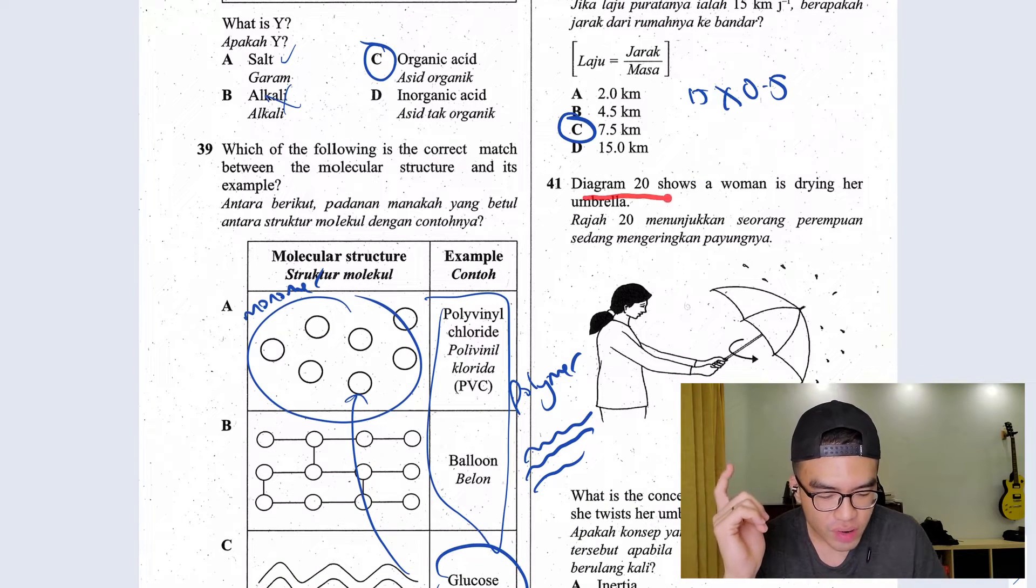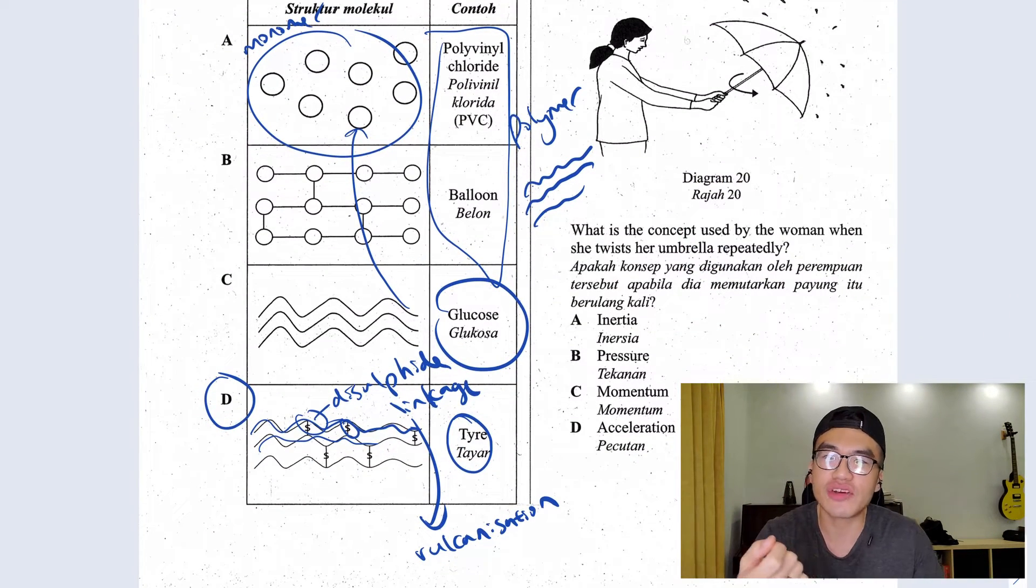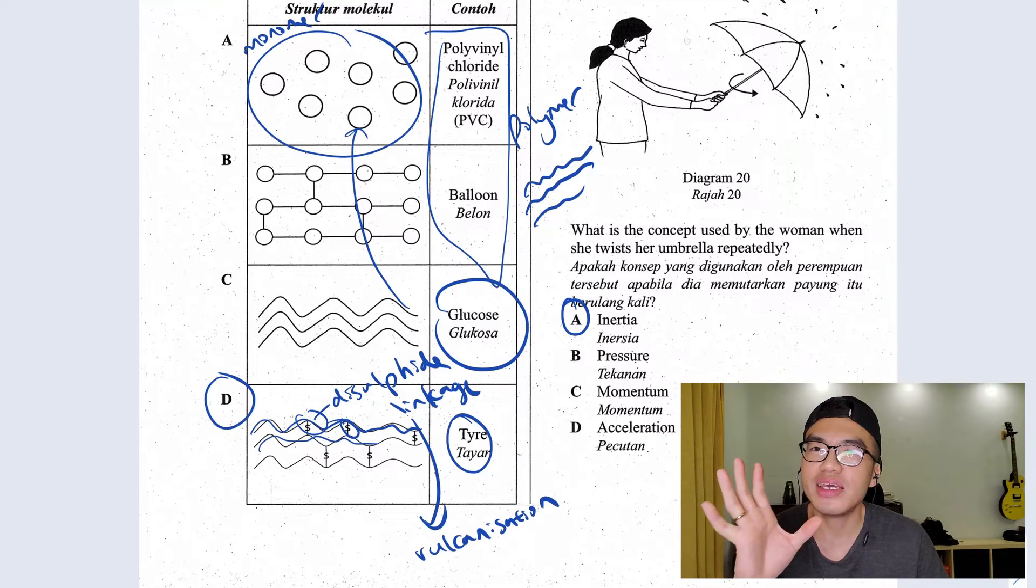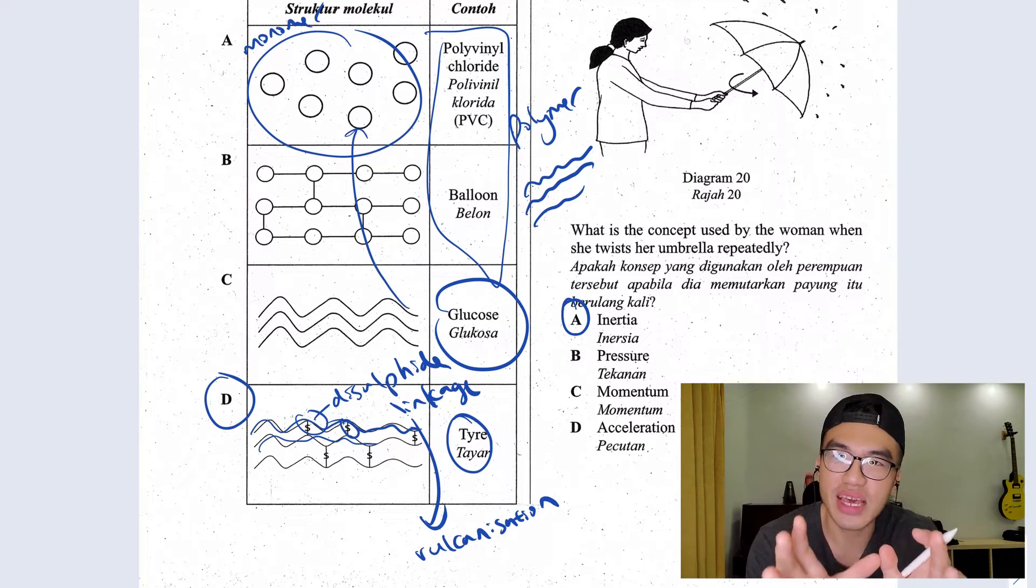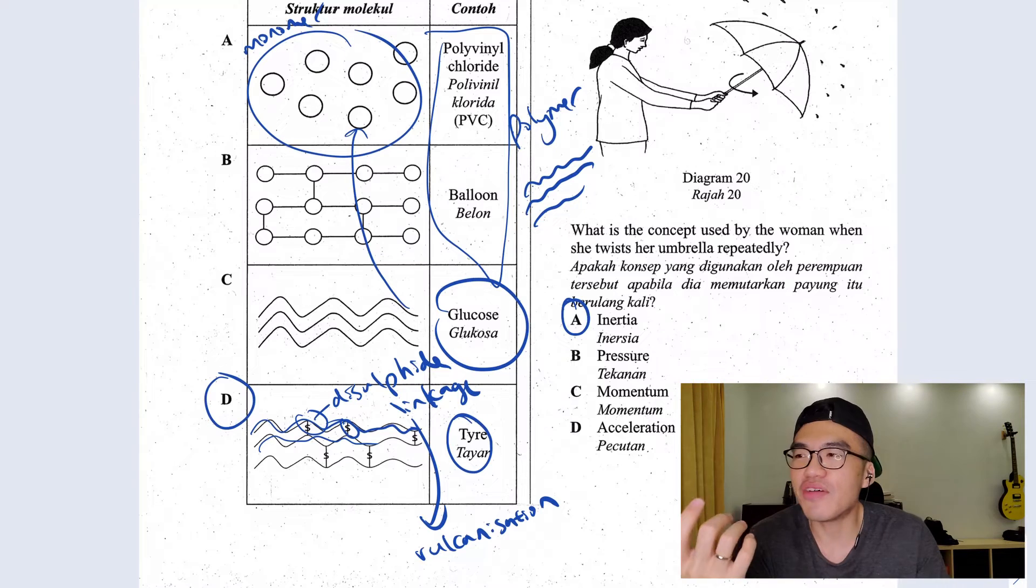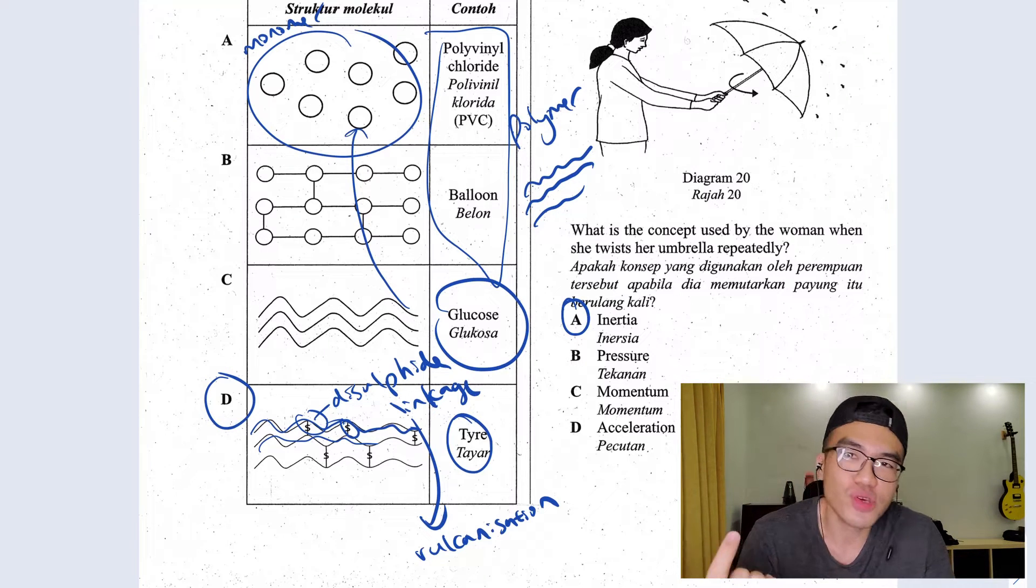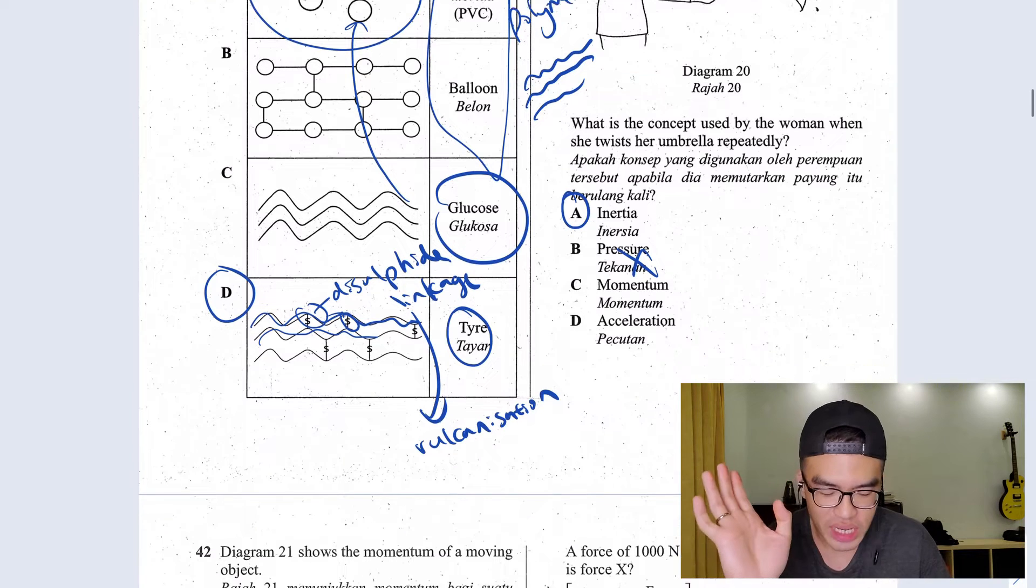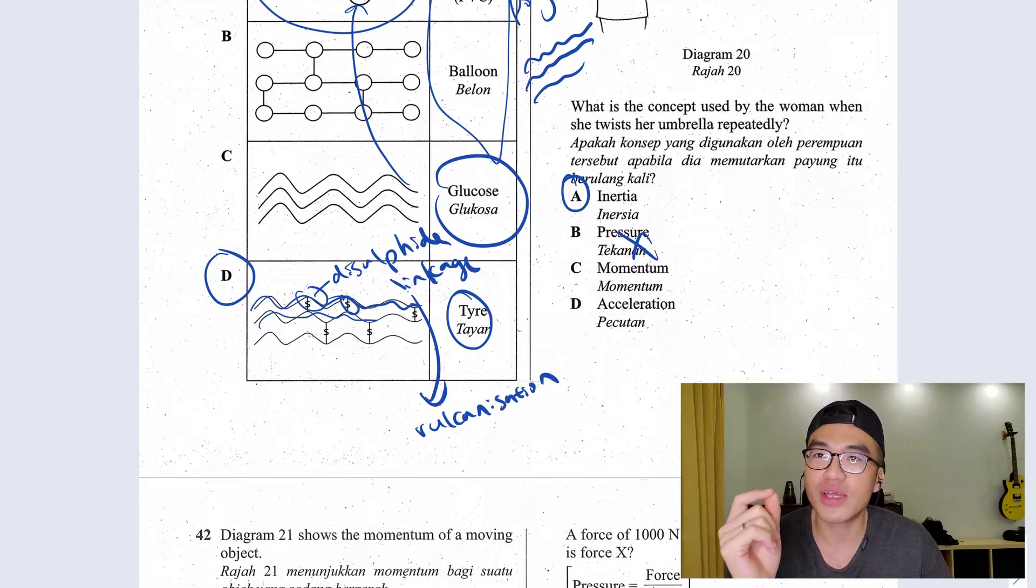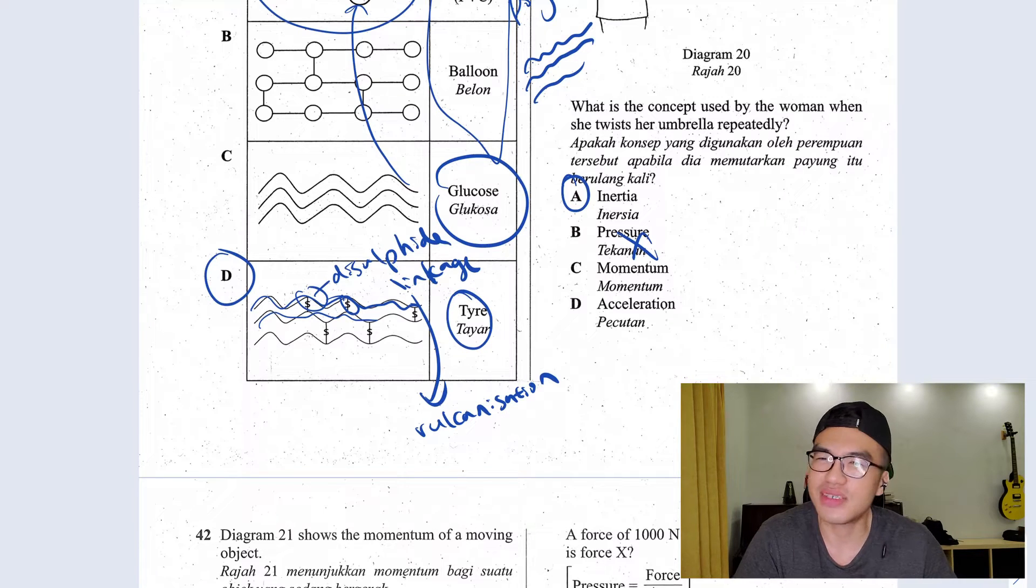Question 41, diagram 20 shows a woman is drawing her umbrella. When you're drawing your umbrella like this, what concept you are using, you're suddenly changing direction so that the water can fly off your umbrella. This is known as inertia. Inertia is the concept that says, thing at rest, stay at rest. Moving thing, stay moving. For example, if you are moving in a bus, when the bus stops, you want to keep moving so you will jerk forward. Conversely, if the bus is not moving, suddenly when the bus accelerates, you want to remain in the original position, so you will jerk to the back. Pressure is related to surface, not in this case. Momentum is very close to inertia, but momentum is mostly for moving object. You have a car moving forward, you have momentum. Acceleration, this is not even related here.